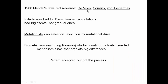In 1900, Mendel's laws were rediscovered by de Vries, Correns, and von Tschermak, who thought they had discovered particulate inheritance for the first time before finding it had been done 35 years earlier. They described genes of large effect. Initially this was actually bad for Darwinism, because the mutations being discovered had big effects — like tall versus short pea plants, or red-eyed versus white-eyed flies — and didn't fit with Darwin's uniformitarian idea of slow, gradual change.